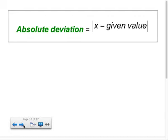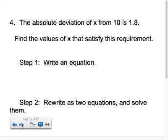Absolute deviation equals the absolute value of x minus the given value. And I'll explain this more as we start looking at some examples here. So number 4 says the absolute deviation of x from 10 is 1.8. Find the values of x that satisfy this requirement. So understand something. Deviation means how far you move away from a given number. So right now the number we're moving away from is 10 and we're moving away from it by 1.8 units.